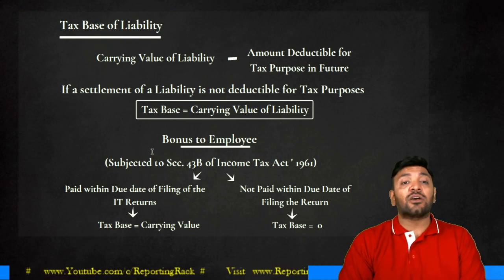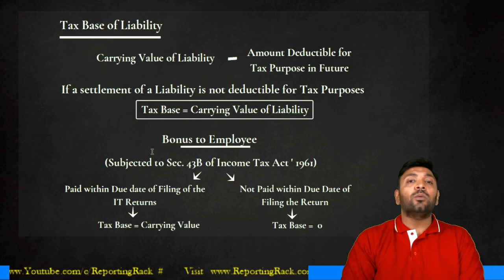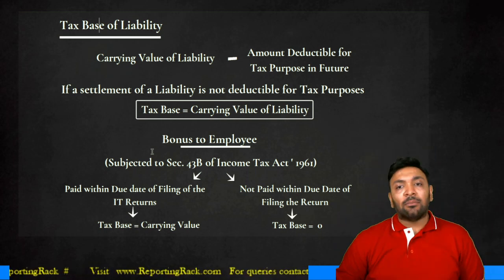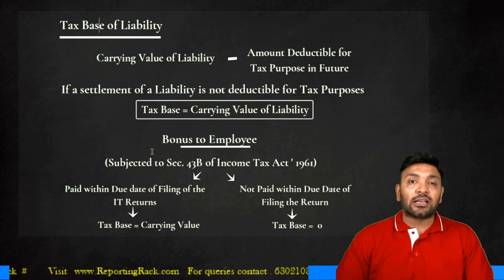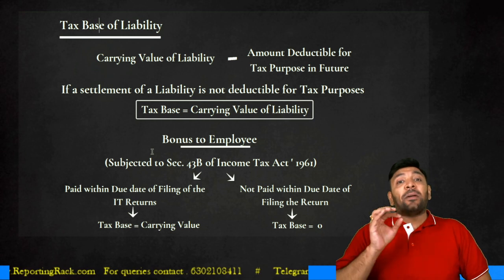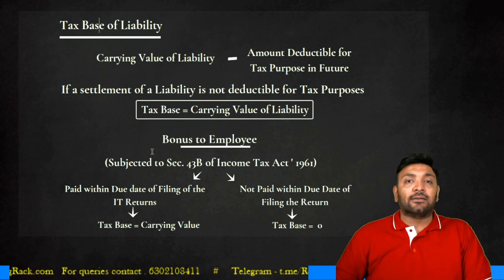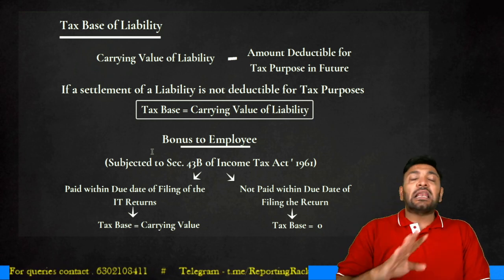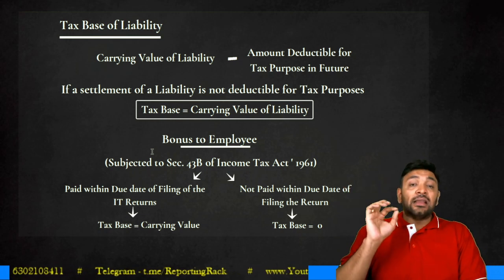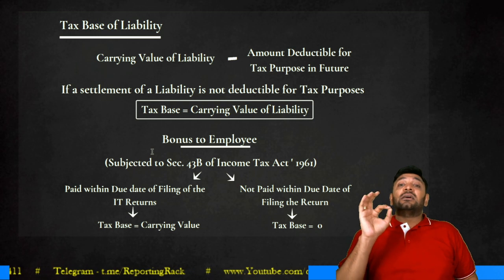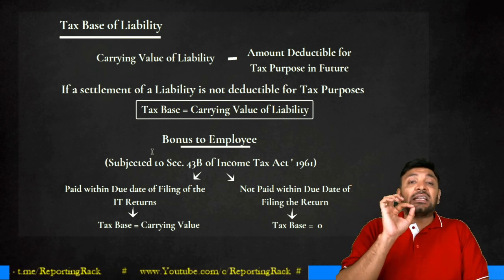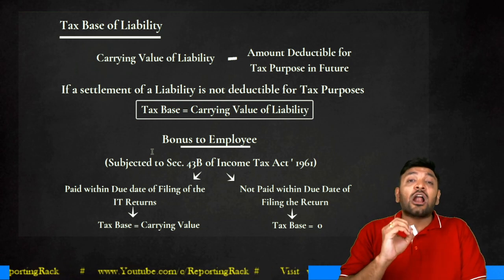Tax base of a liability = Carrying value of the liability minus amount deductible for tax purposes in future. Example: provision for bonus to employee that is unpaid on the date of filing the income tax return. It cannot be allowed as a deduction in the current year but is eligible in the subsequent year when paid. So carrying value minus the full amount deductible in future = zero. Therefore, tax base of such unpaid liability is zero.